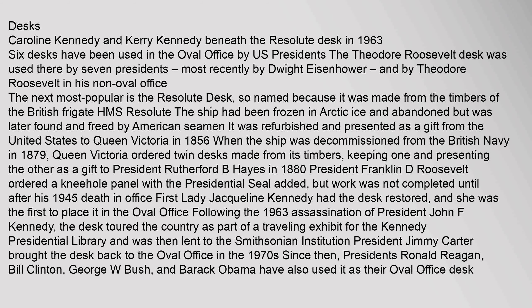Six desks have been used in the Oval Office by U.S. Presidents. The Theodore Roosevelt Desk was used there by seven presidents, most recently by Dwight Eisenhower. The next most popular is the Resolute Desk, so named because it was made from the timbers of the British frigate HMS Resolute. The ship had been frozen in Arctic ice and abandoned but was later found and freed by American seamen. It was refurbished and presented as a gift from the United States to Queen Victoria in 1856. When the ship was decommissioned from the British Navy in 1879, Queen Victoria ordered twin desks made from its timbers, keeping one and presenting the other as a gift to President Rutherford B. Hayes in 1880.